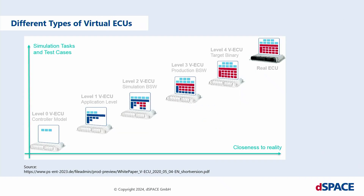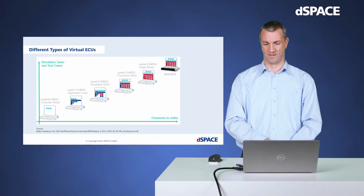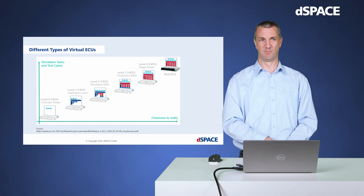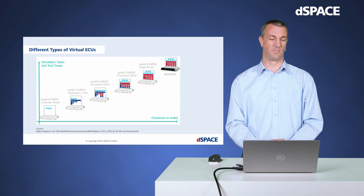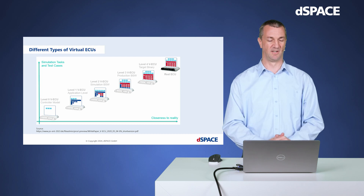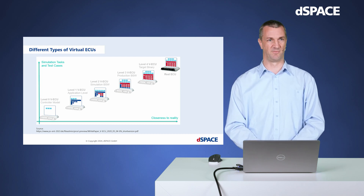Coming back to virtual ECUs: depending on what you want to test, you have to include different parts of the overall software. For that, different levels have been defined by a company called Prostep, who have published a white paper on this — I've included the link. Depending on what is part of the virtual ECU, there are levels from zero up to level four. Sophia has prepared an additional demo at level two, which means the application software and control software are included, but we generate special basic software parts specifically for our tests. Sophia, can you demonstrate this?